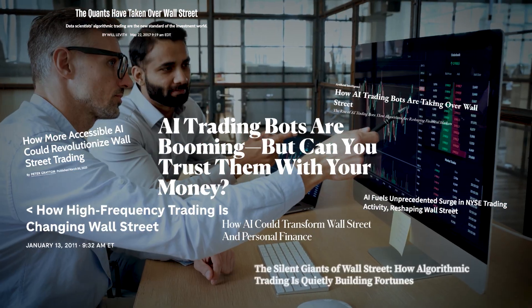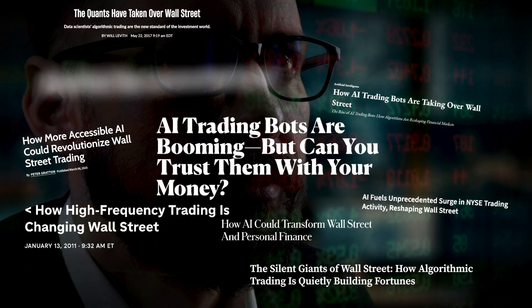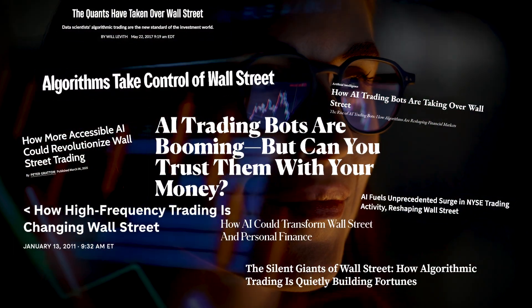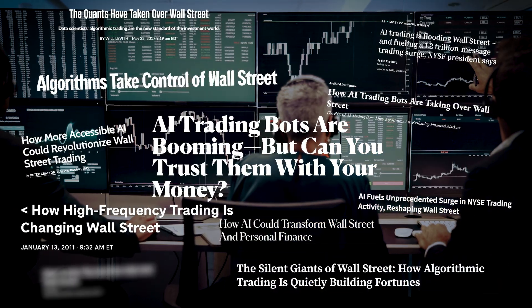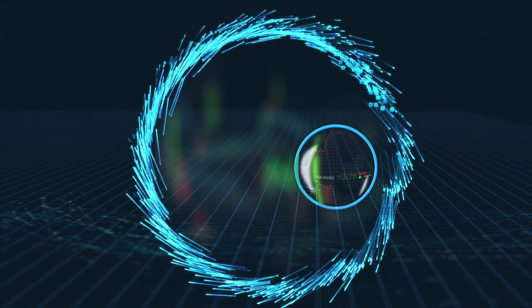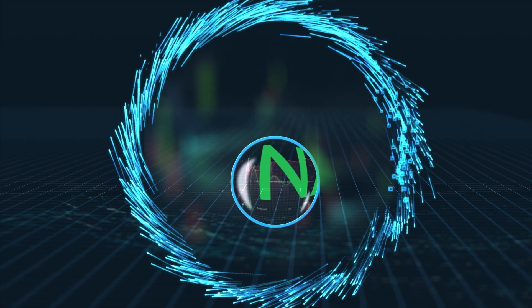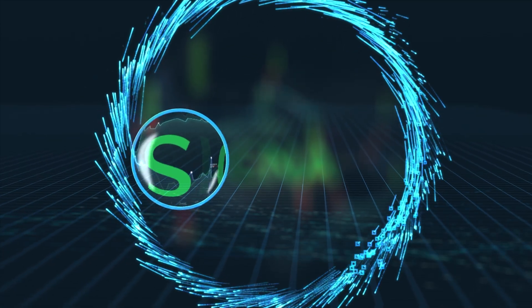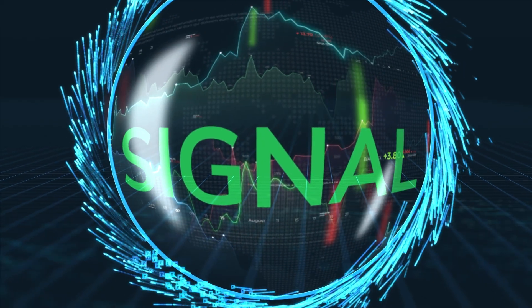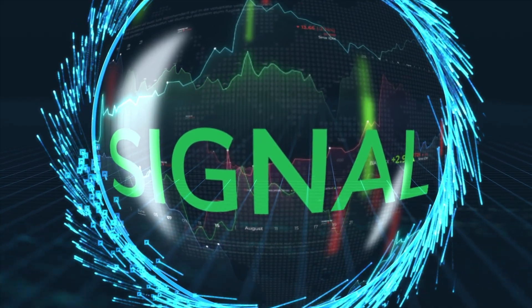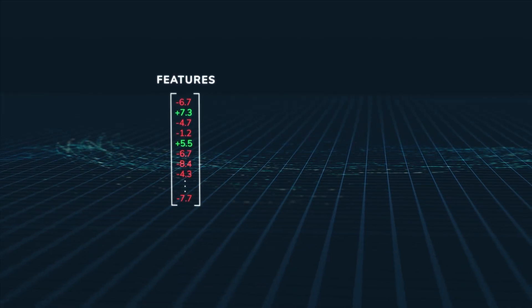Today, institutional algorithms and retail traders are all watching the same economic releases, the same intraday moves, the same flows, and reacting, sometimes in seconds. That creates feedback loops, and those feedback loops create patterns. They're small, they're transient, but they're statistically detectable if you look at them in the right way and at the right scale.